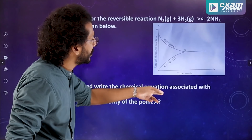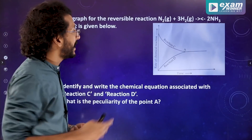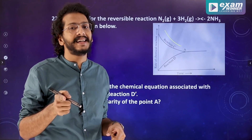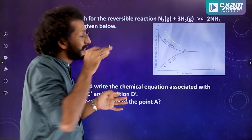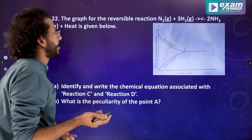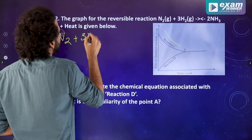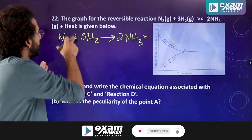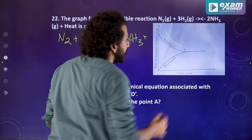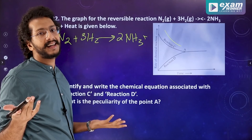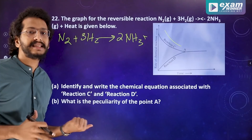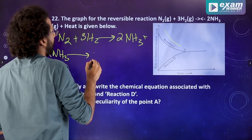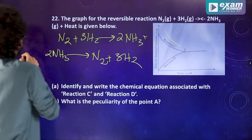Identify and write the chemical equation associated with reaction C and reaction D. Reaction D is the backward reaction where the rate increases over time. The backward reaction equation is 2NH3 giving N2 plus 3H2.